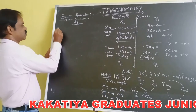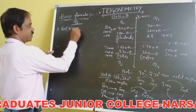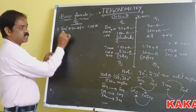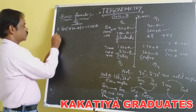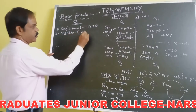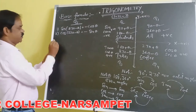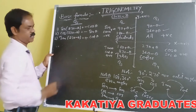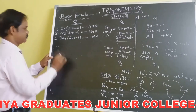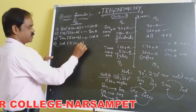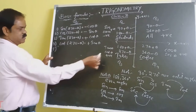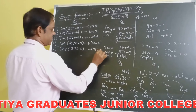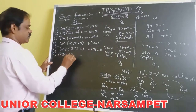For 270 − θ: since 270 is odd, sin changes into cos. Sin(270 − θ) = minus cos θ, because sin is negative in the third coordinate. Cos(270 − θ) = minus sin θ, because cos changes into sin and cos is negative. Tan(270 − θ) = minus cot θ. Cot(270 − θ) = minus tan θ. Sec(270 − θ) = minus cosec θ. Cosec(270 − θ) = minus sec θ.